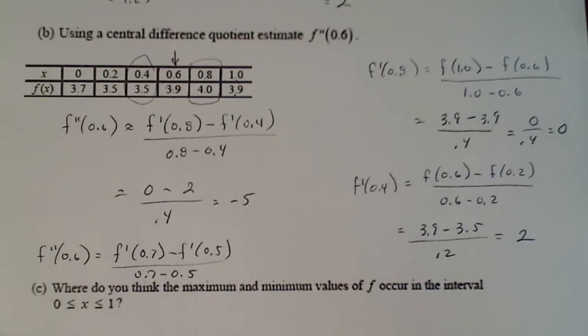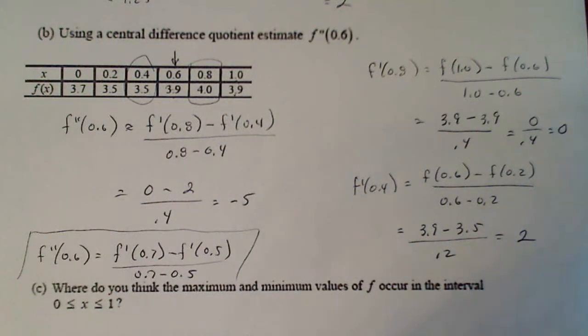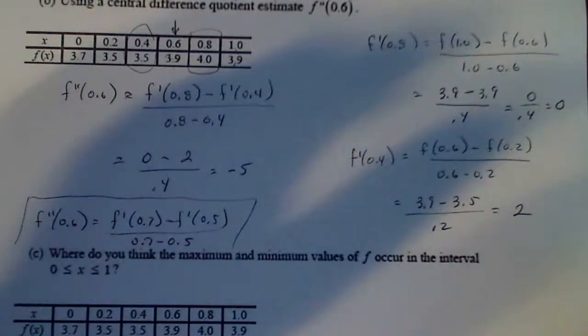So the way that you set it up, these are both legitimate estimations or both central difference quotients. It doesn't really matter which way. I think the numbers will be slightly different, but it should work either way.